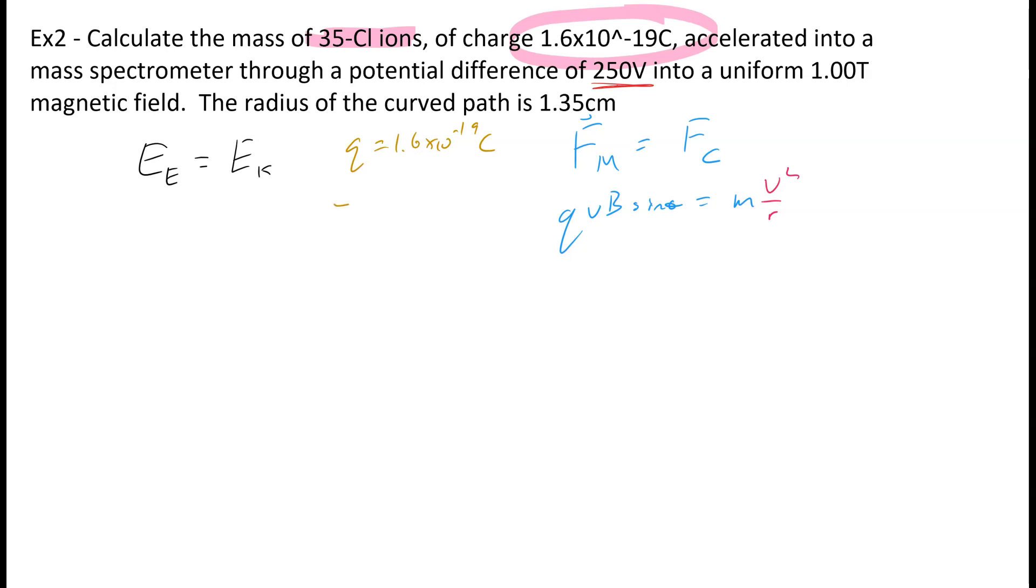So we also know we have a delta V of 250 volts. We've got a magnetic field of 1.00 teslas. And the radius of our path is 0.0135 meters.